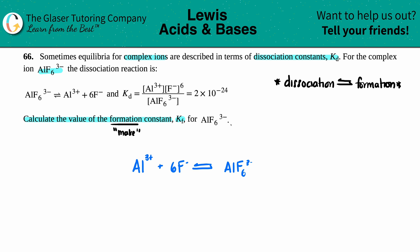Since we flip the reaction, what do we do with the K value? The formula is: anytime you're looking for a formation, it's just the inverse of the dissociation. Kf = 1/Kd. So to find Kf, just take 1 divided by the dissociation value they gave us, which is 2×10^-24.